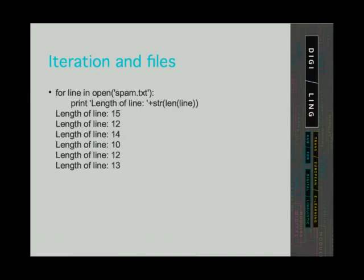We can also count the number of characters in each line with the function len. As you can see, the program returned the number of characters including the new lines. Do you remember what method used on strings removes whitespace if found at the beginning or the end of a string? Try adding that method to this for loop and see what happens. You should get the numbers decreased by 1, except for one line — which line is that and why?